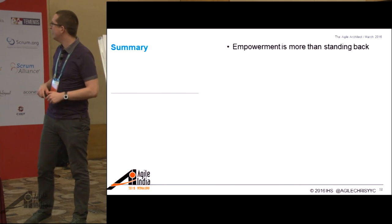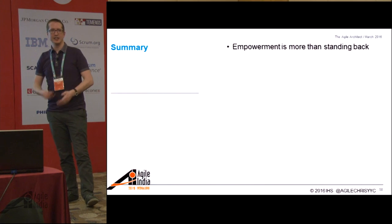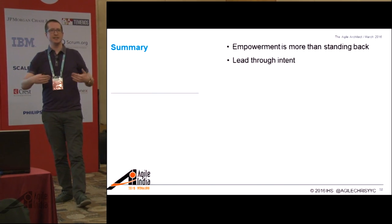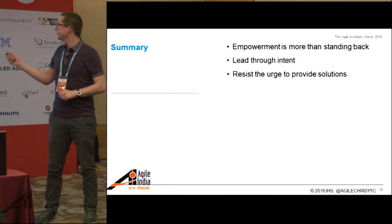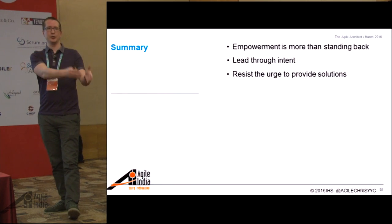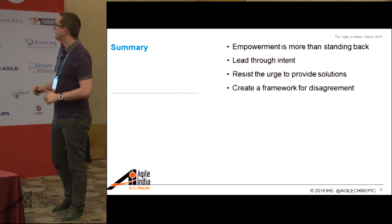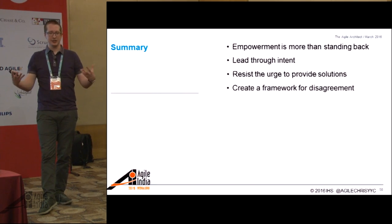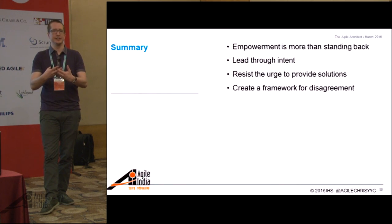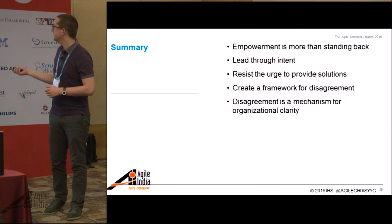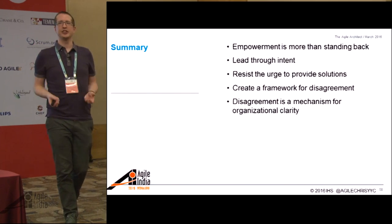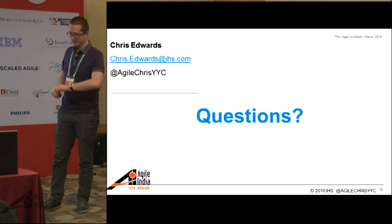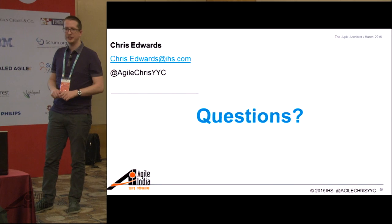Some learnings for me: Empowerment is more than just taking your hands off the wheel and letting go — you need to give people support. Lead through intent. Don't just give answers. Build understanding. Explain the why — what is the architectural intent? Resist the urge to provide solutions. Partner with people; help them take ownership of the decisions they're making. Create a framework for disagreement — the framework itself can help navigate conflict, but if it's common across the organization, it can create this emergent behavior of better relationships across all the teams. And when conflict happens, when there's major disagreements, celebrate that, because you're about to get a deeper understanding across your organization. Thank you everyone for listening.